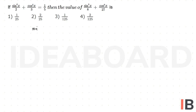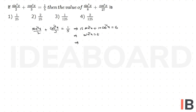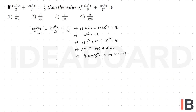Given sin to the power of 4x by 2 plus cos to the power of 4x by 3 equals 1 by 5, that implies 15 sin to the power of 4x plus 10 cos to the power of 4x equals 6. Let sin squared x equal t, then 15t squared plus 10 into (1 minus t) whole squared equals 6, which gives 25t squared minus 20t plus 4 equals 0. So (5t minus 2) whole squared equals 0, implying t equals 2 by 5.